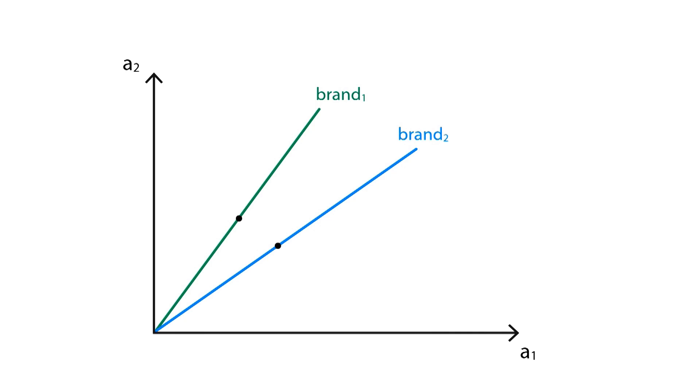The further up we move along the line, the more quantity of this brand we'll be buying, hence enjoying more of these two attributes. As you can see, brand1 is closer to the vertical axis, while the second brand is closer to the horizontal axis. This means that the same quantity of goods will report more of attribute A1 if we choose brand2, and more of attribute A2 if we choose brand1.